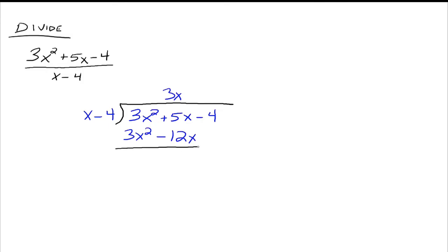Then we draw our line, because next we subtract this part from the dividend. We're subtracting the entire polynomial 3x squared minus 12x from 3x squared plus 5x minus 4. We need to distribute a negative 1 through to both the 3x squared and the negative 12x, giving us a negative 3x squared and a positive 12x. This is going to happen every single time when we go to subtract a polynomial from another polynomial.